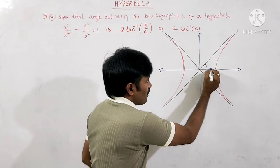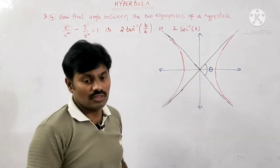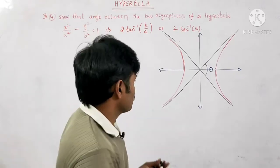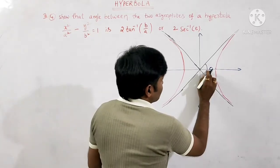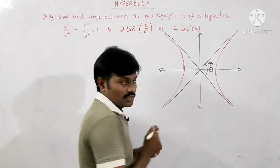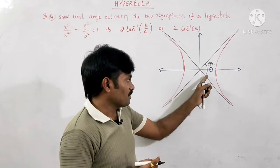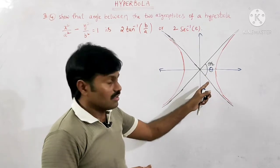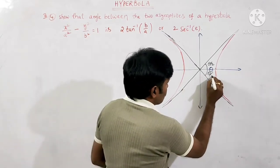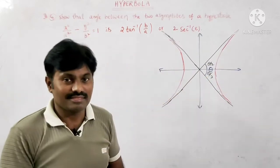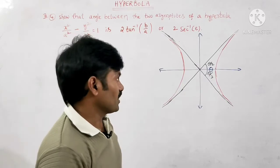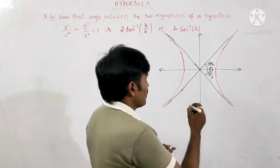I am considering the angle between these two asymptotes as θ. The angle between the x-axis and the asymptote above the x-axis is θ/2, and the angle between the x-axis and the asymptote below is also θ/2. The sum of these two is θ, the total angle between the two asymptotes.